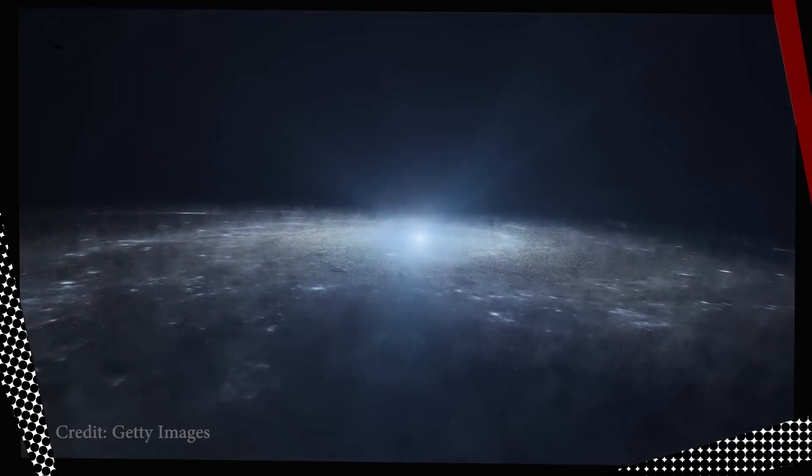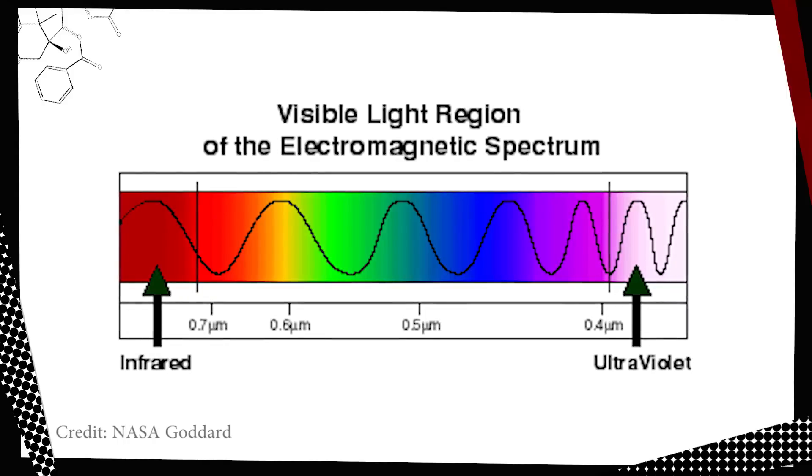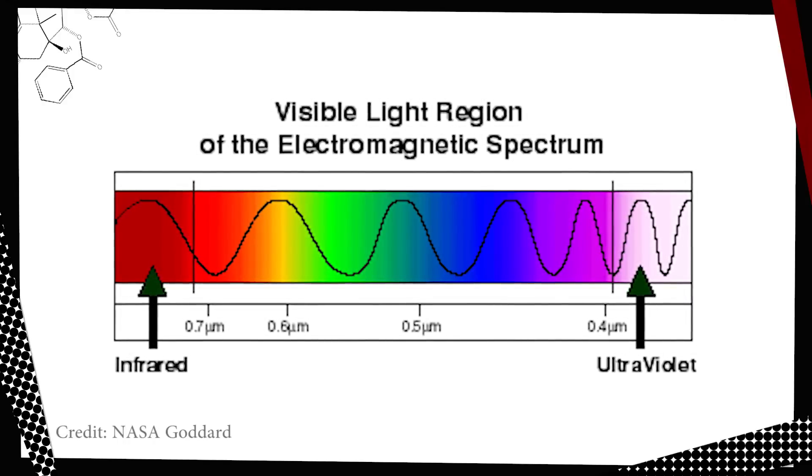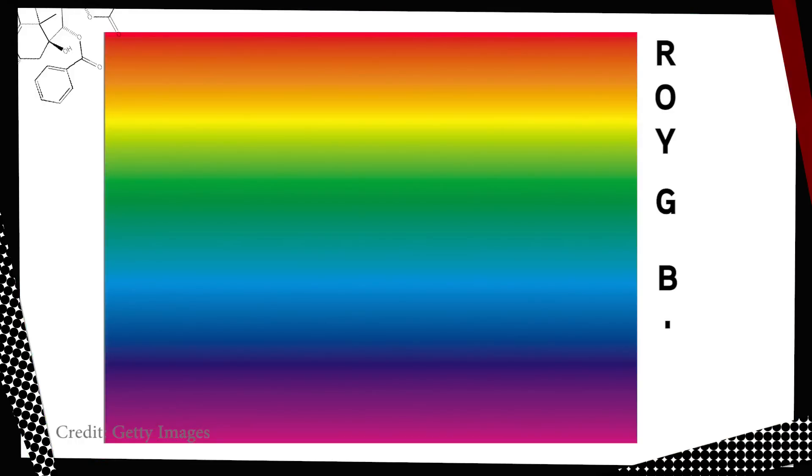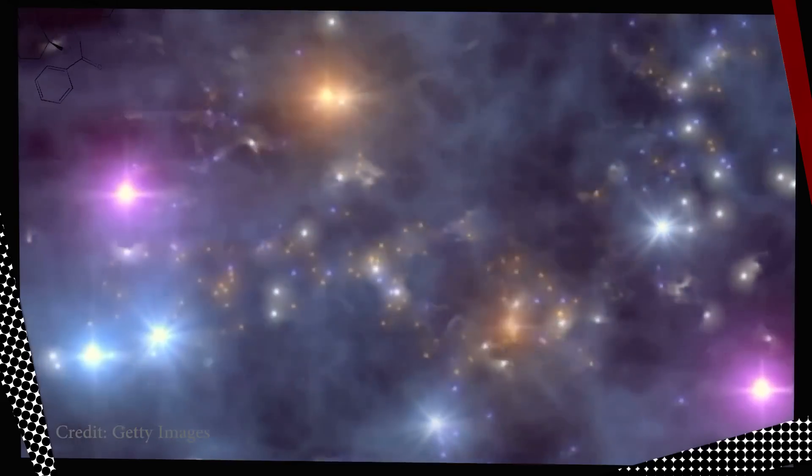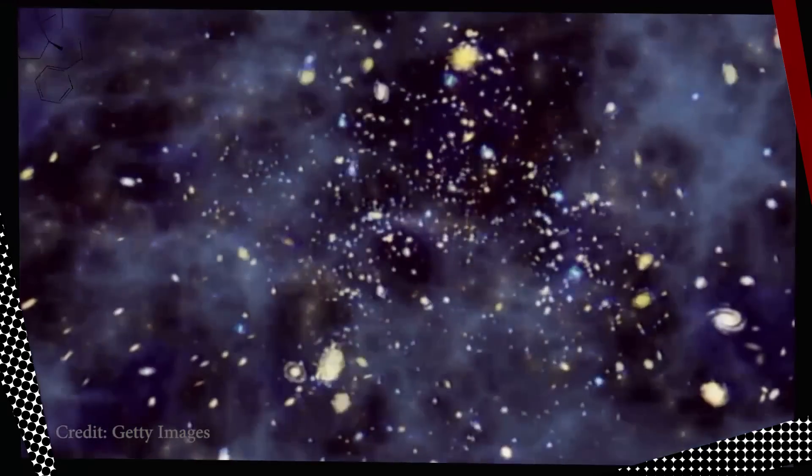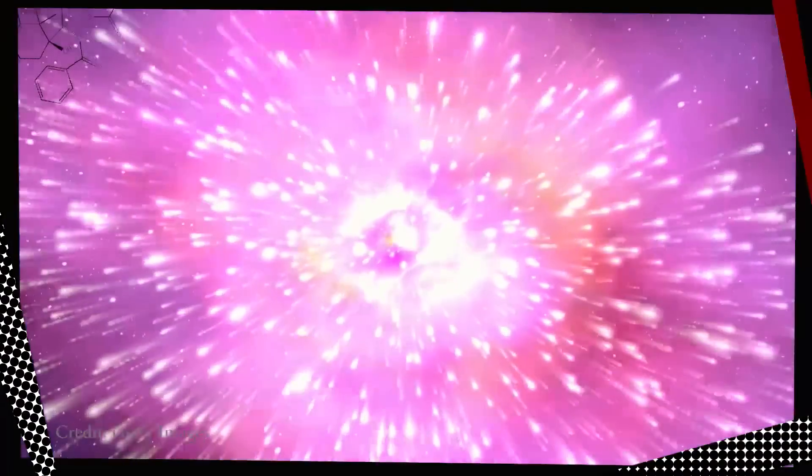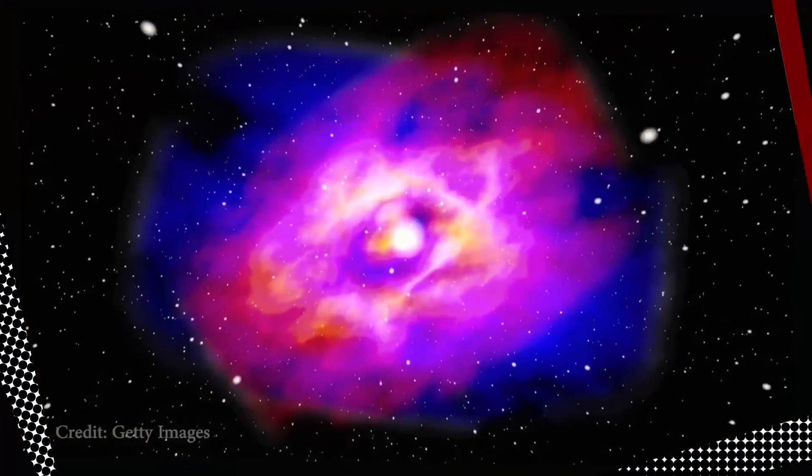Light waves stretch in the same way as galaxies recede away from us but as they stretch they slightly shift in color not pitch. Picture the visible light spectrum you know the colors of the rainbow. Roy G. Biv. When a galaxy is receding from you due to the expansion of space between you and the galaxy the light that its stars emit shifts to the red end of the spectrum. That's because the light wavelengths get longer. It's red shifted.